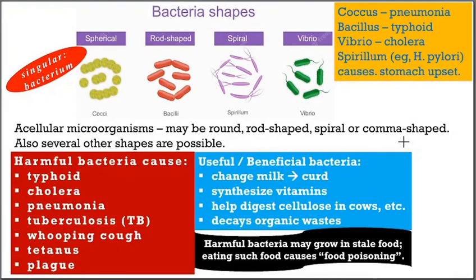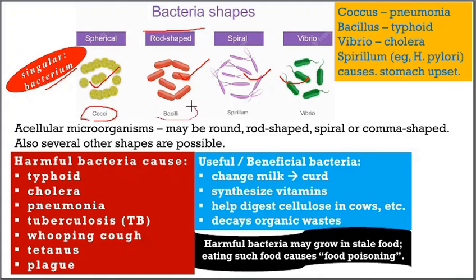Next we have bacteria (singular: bacterium, plural: bacteria). Bacteria may be of different shapes: round or spherical (coccus), rod-shaped (bacillus), spiral or corkscrew-shaped (spirillum), or comma-shaped (vibrio). For example, round bacteria cause pneumonia; rod-shaped bacillus causes typhoid; comma-shaped vibrio causes cholera; corkscrew-shaped spirillum such as H. pylori causes stomach upset.